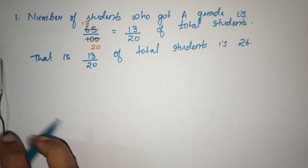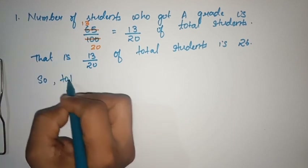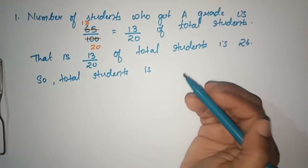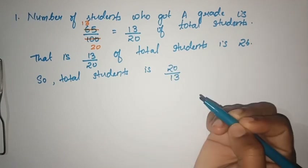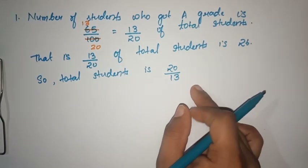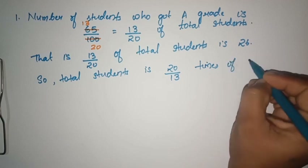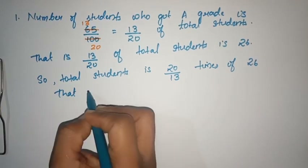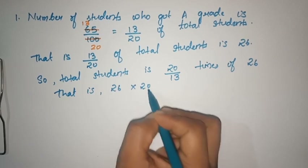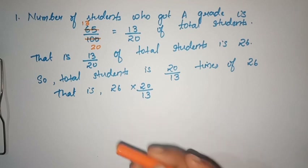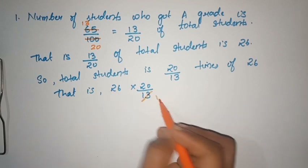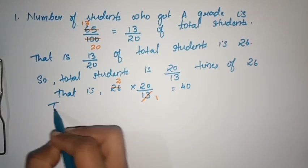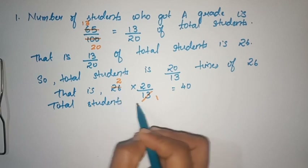So total students equals 20 by 13 times of 26. That is 26 into 20 by 13. We cancel: 13 into 2 is 26, so the answer is 40. Total students is equal to 40.